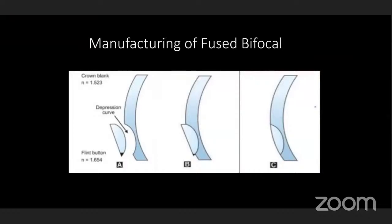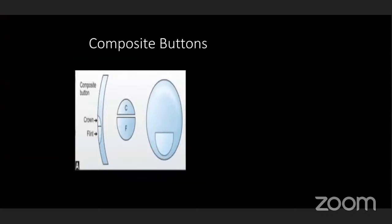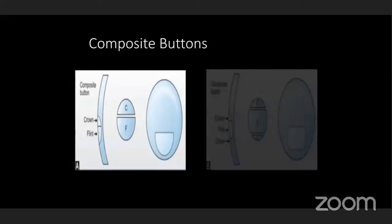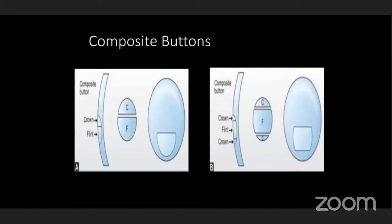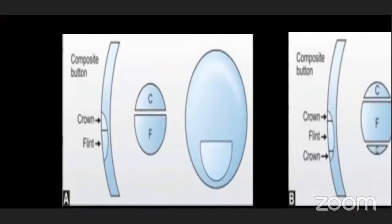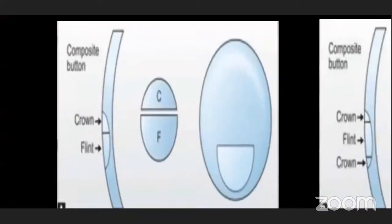To identify a fused bifocal from cemented and one-piece: when you run your finger over the surface of the lens, you will not be able to feel the button, even though you can see the visibility of the lower segment for reading. There are also composite buttons. Previously we saw a round segment bifocal, but for flat top bifocal or ribbon lenses, we create a depression and take a semicircle of flint lens — the above portion is filled with crown glass. Once inserted at very high temperature, the crown glass will get united with the base lens and only the flint lens will be visible as the segment, giving a flat top bifocal.